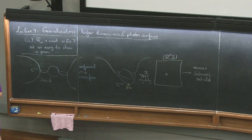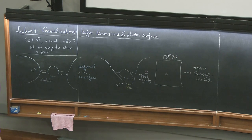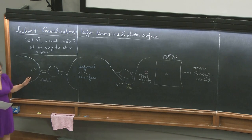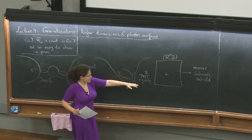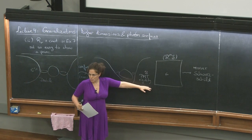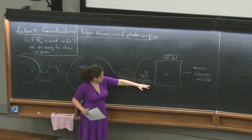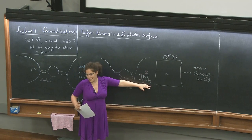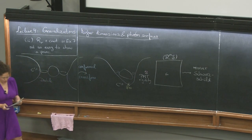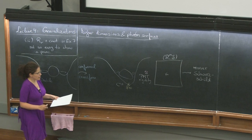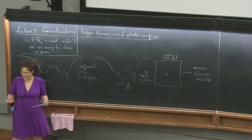Somebody mentioned that in the Bartnik paper there was a condition on the Ricci tensor — no, there's not. The Bartnik positive mass theorem is a higher-dimensional version of Witten's spin-proof of the positive mass theorem, and it is under the same conditions as the original theorem. No extra conditions, so we're good. It's theorem 6.3 if you want to check.